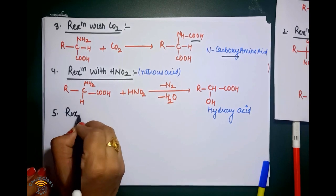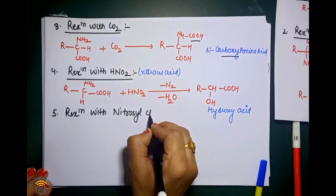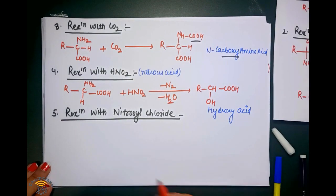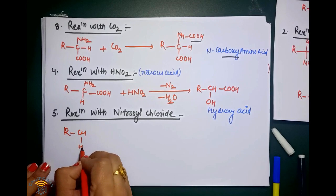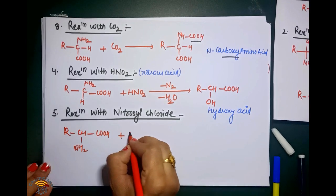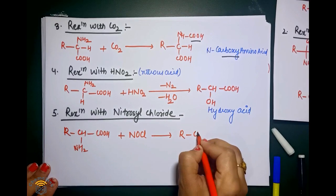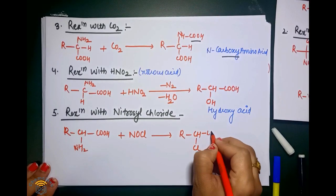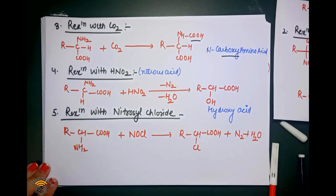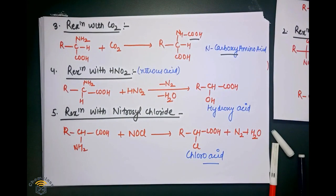The fifth reaction given by the NH2 group is the reaction with nitrosyl chloride (NOCl). You take amino acid and it reacts with NOCl. With loss of N2 and water, we get the corresponding product, which is known as a fluoro acid.